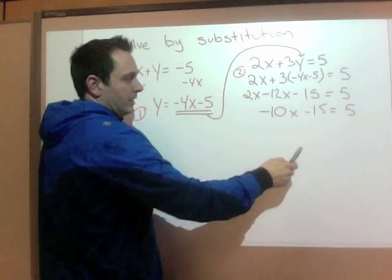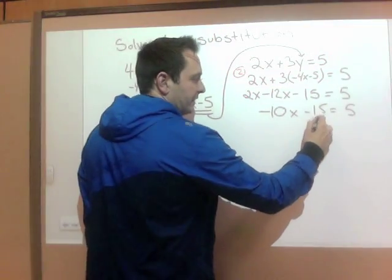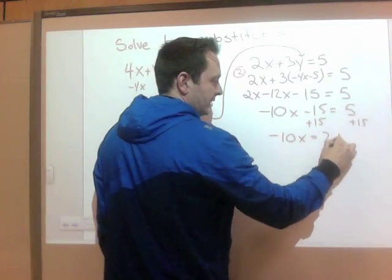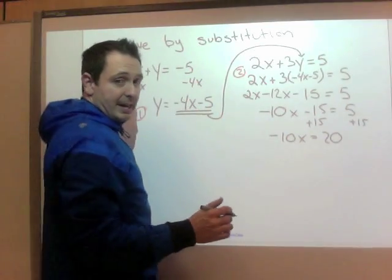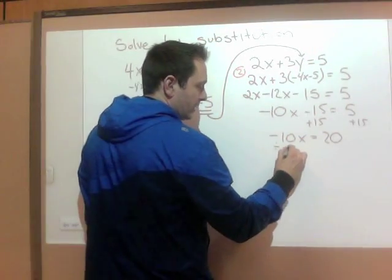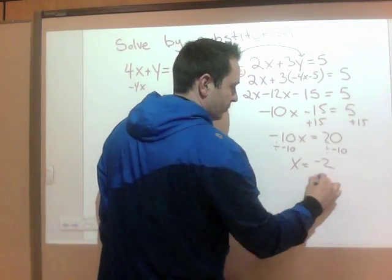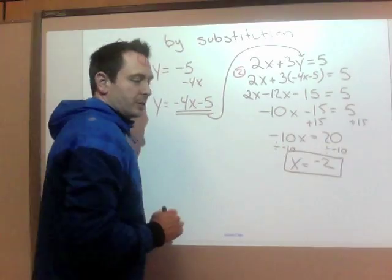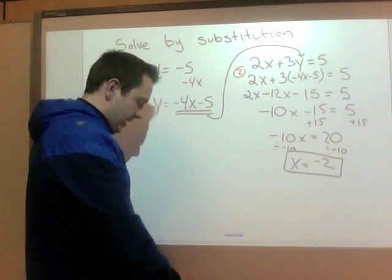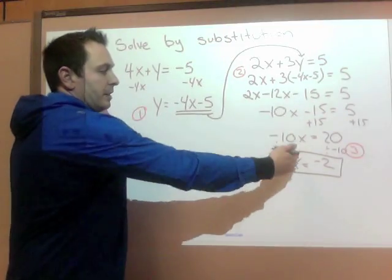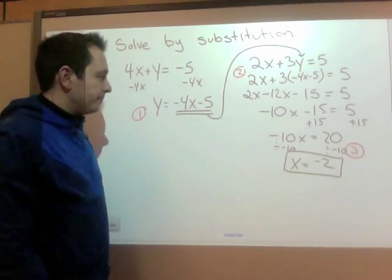Now, collect your x's. Collect your numbers. 2x minus 12x is minus 10x. And again, if you're doing this all in one step, that's okay. I need to add 15 to both sides. So negative 10x equals 20. Still working to get that x alone. Divide both sides by negative 10. And x equals negative 2. Half my answer. So that is step three done. Step three was solve that variable to get it by itself.